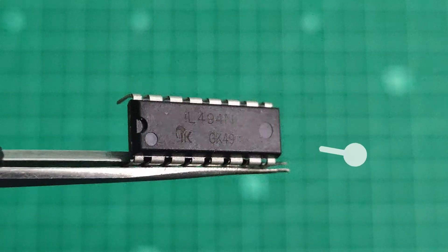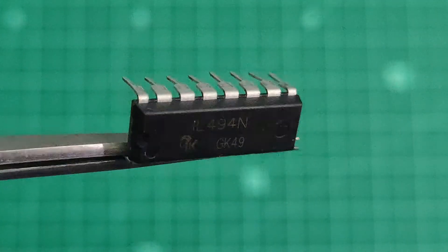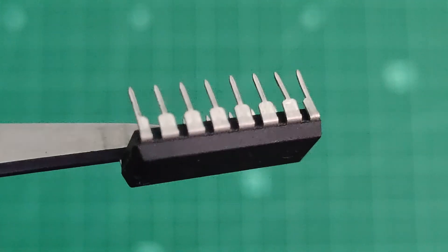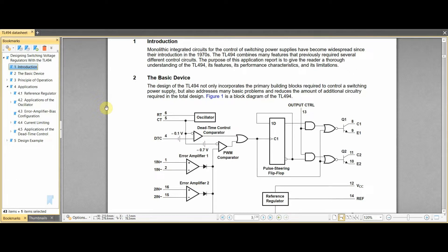The TL494 is a very popular PWM control chip used in power supplies and various switching applications. The main component of this project is the TL494 IC, and I have opened up the datasheet which describes the block diagram and the internal working of this IC. We have the timing components RT and CT on pins 6 and 5, which determine the oscillating frequency of the output pulses.